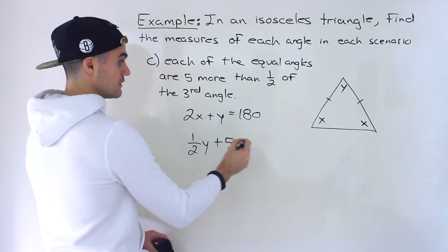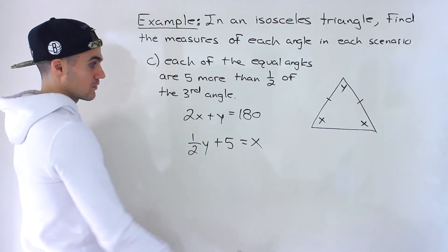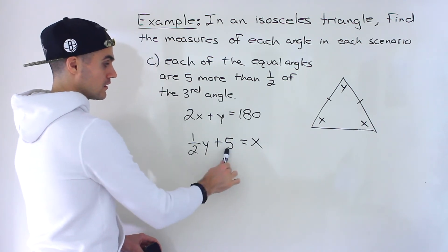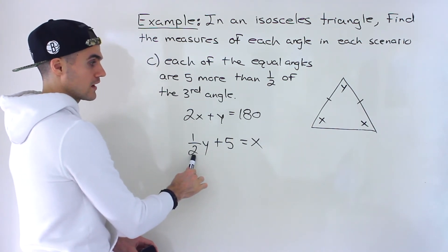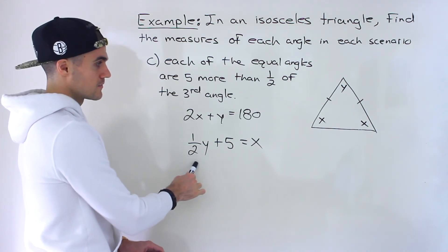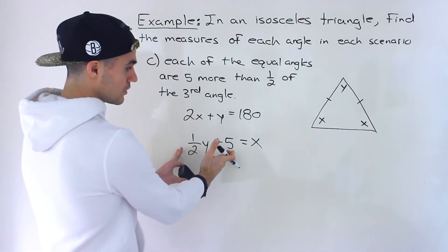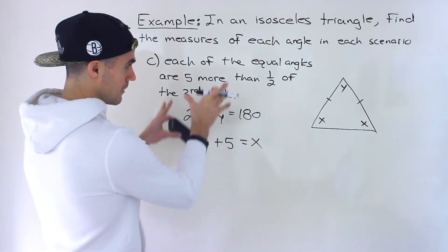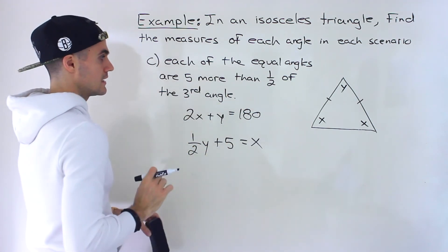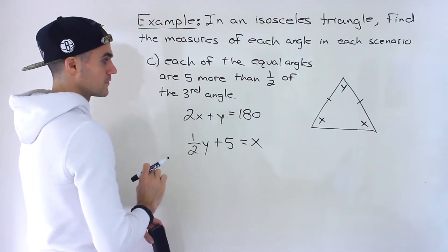So our second equation is x equals one half y plus 5. You need to read these carefully, maybe a couple of times, to make sure the equation matches the wording. It can take a bit to get right, but once you do, it's just a substitution or elimination problem.